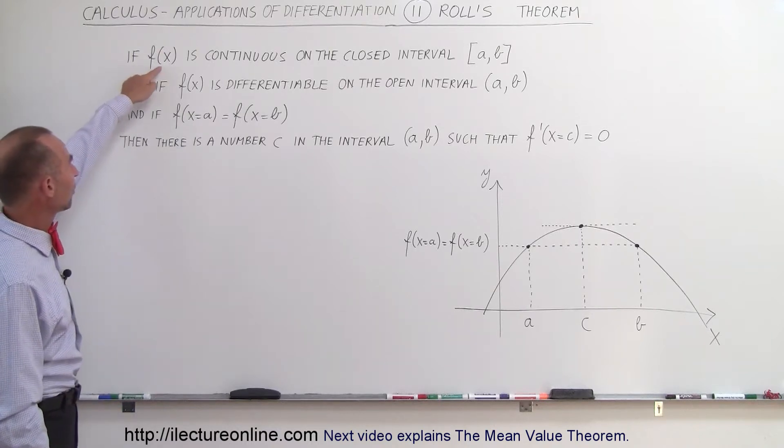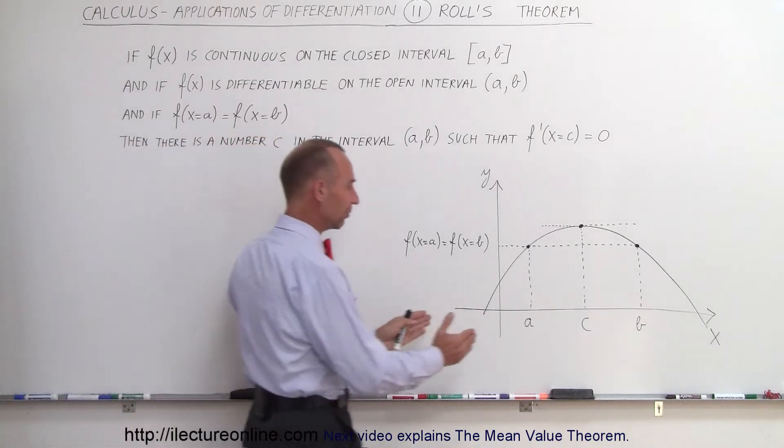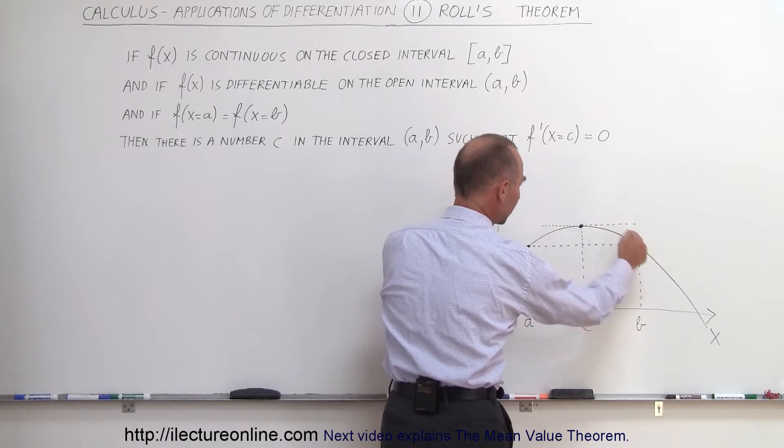If we have a function f of x which is continuous on the closed interval from a to b, so here we have an interval from a to b, including the endpoints, you can see how the function is continuous.